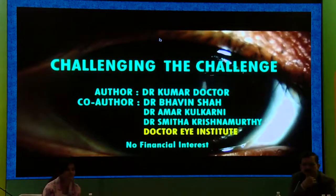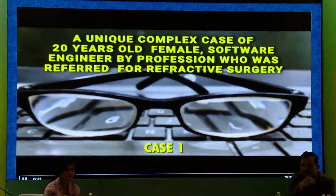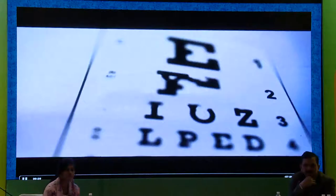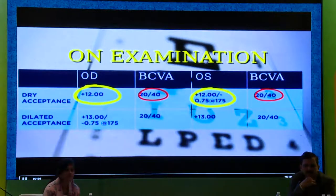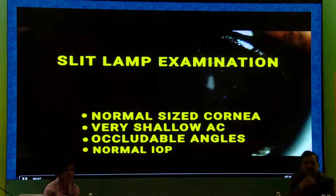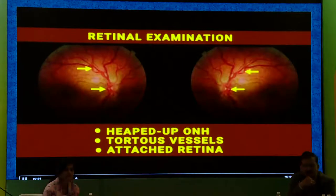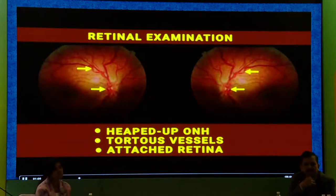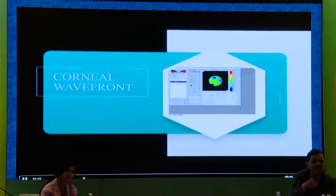I'll show you a case of an extremely short eye. Small eyes can be classified according to anterior segment parameters. A female software engineer patient came to me with vision of 20/400 in both eyes with a correction of plus 12 diopters. On slit lamp examination: normal cornea, prophylactic PI done, heaped-up optic nerve head, tortuous vessels. We performed OCT at the macula, topography, tomography, and wavefront analysis.